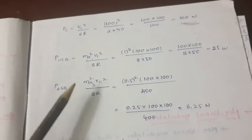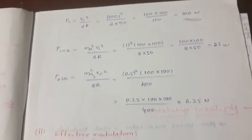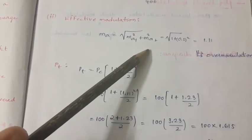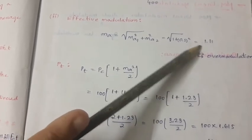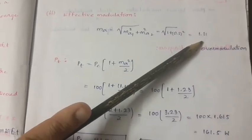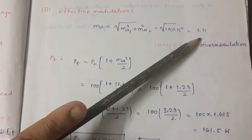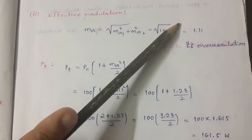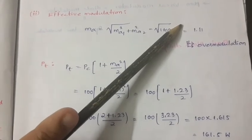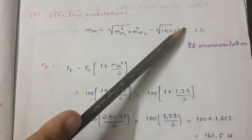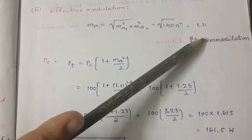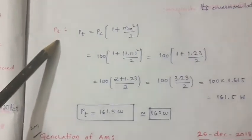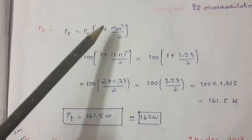For the effective modulation index, we have two values: ma1 = 1 and ma2 = 0.5, giving a total effective modulation index of approximately 1.11. Theory states that an amplitude modulated wave should have a modulation index of at most unity. If it exceeds unity, it is called over-modulation, meaning distortions are present — similar to external noise in a ham radio. The system must be tuned so the modulation index stays below 1.